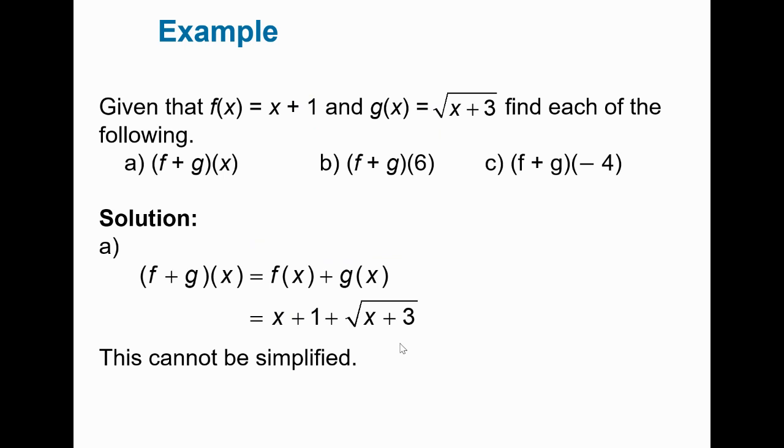Given that f of x is x plus 1, g of x is the square root of x plus 3, find each of the following. f plus g of x. Well, simply taking the f function, which is x plus 1, and adding to that the g function, which is radical x plus 3. This cannot be simplified. You're done. f plus g of x is x plus 1 plus radical x plus 3.